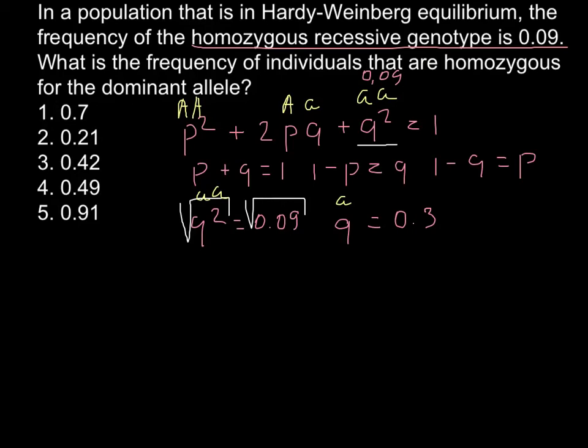As you see from the formula here, frequency of the recessive allele when is known, we can solve for P. We have to deduct 1 minus 0.3, and we would find P.